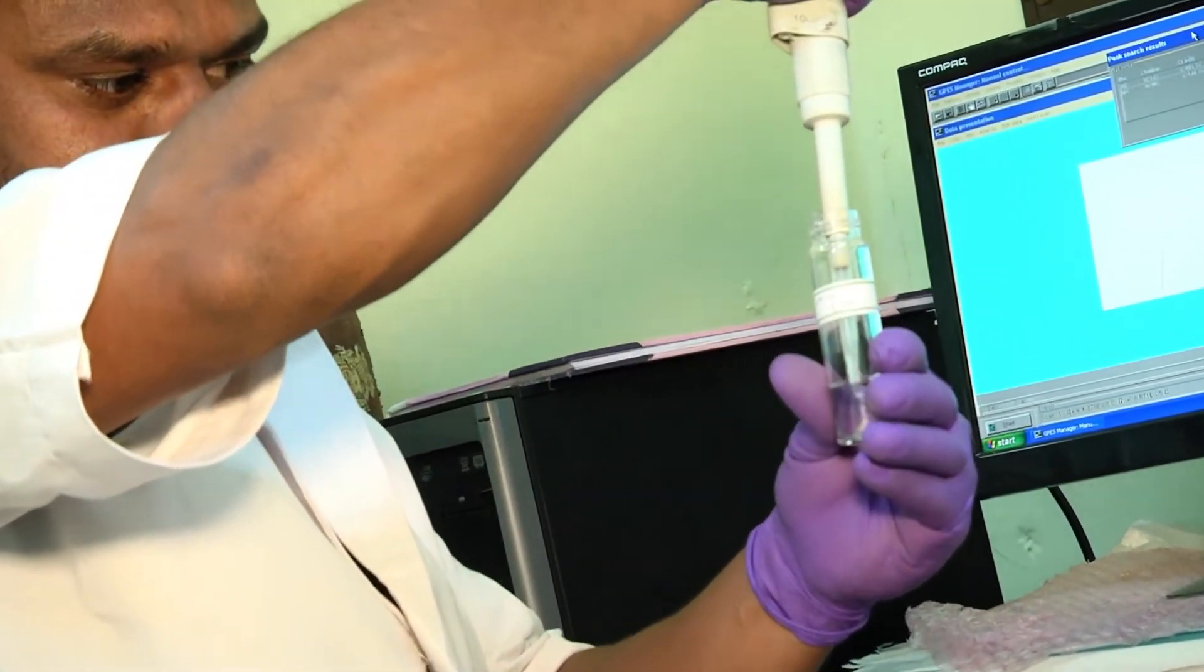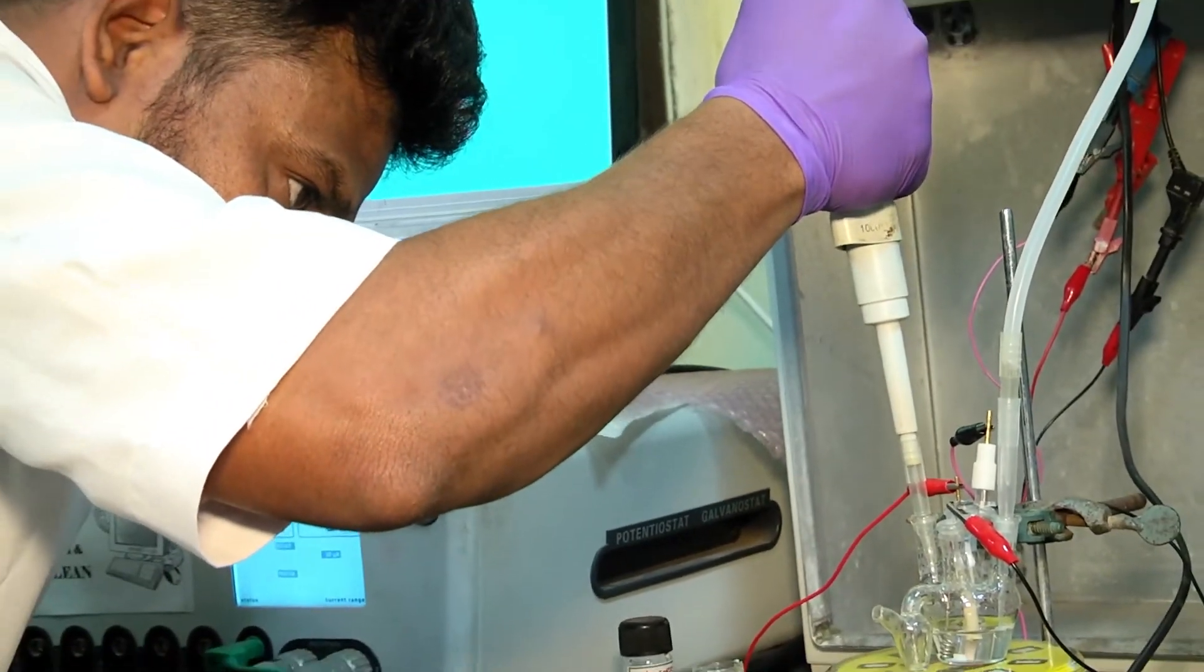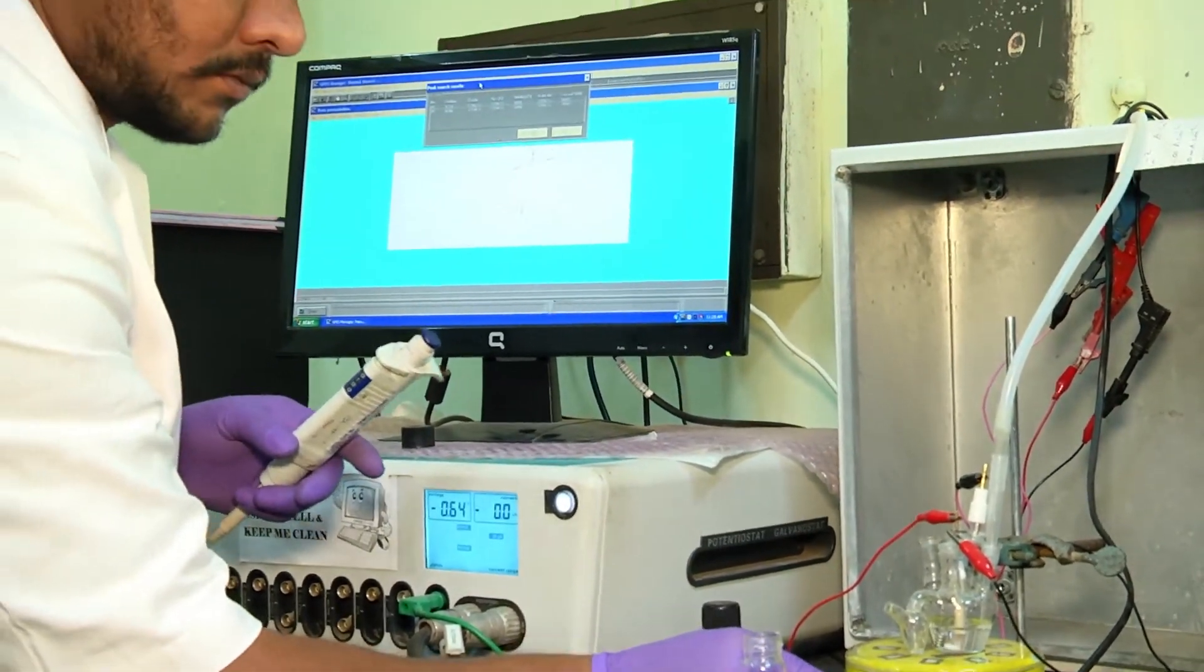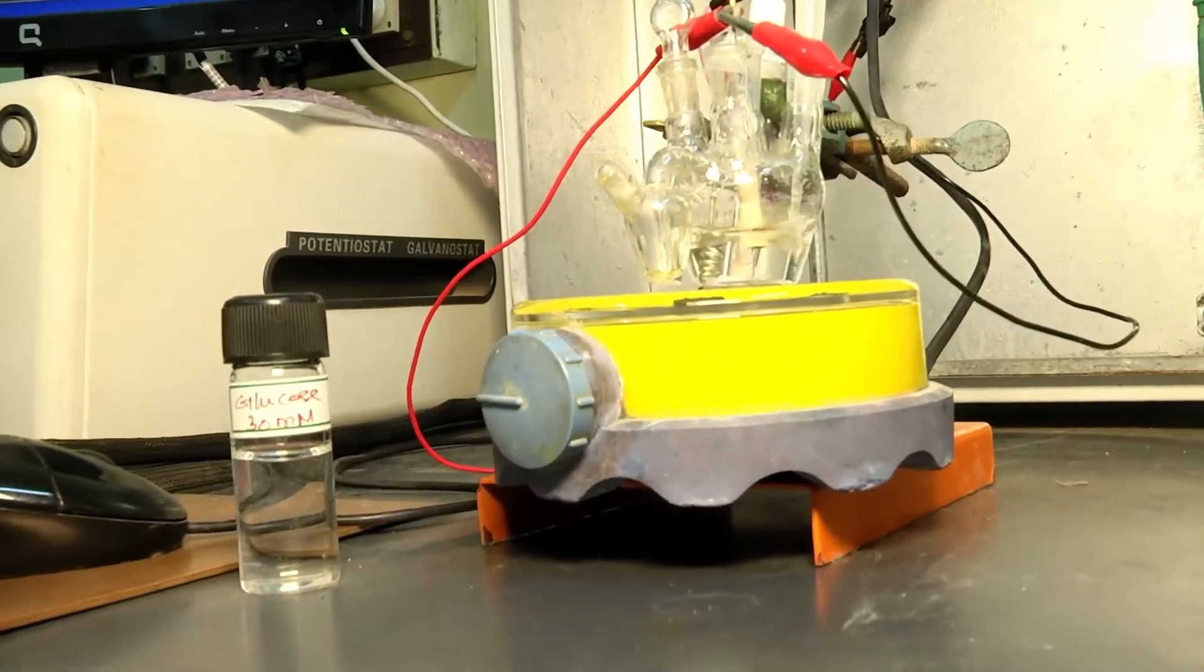Then for demonstrating glucose sensor, a known quantity of glucose is added to the electrolyte from the stock solution and left to stand for a few minutes.